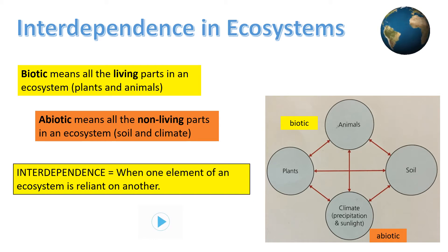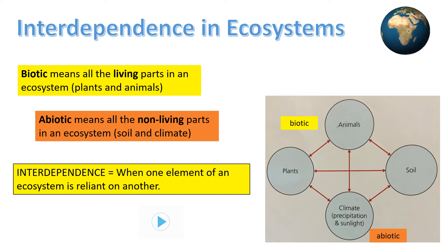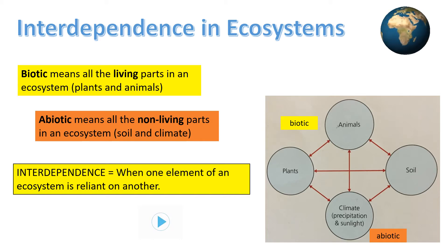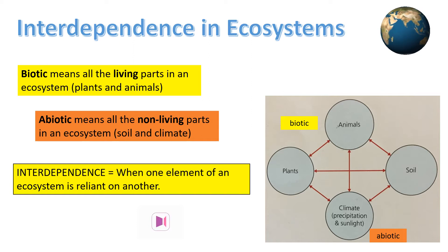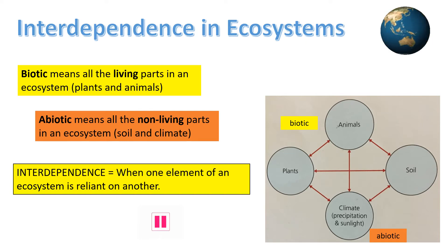Notice the two-way arrows that connect these key parts of an ecosystem. Some are obvious, such as climate providing moisture to water the plants and drain into soils and rivers, which in turn supports animals. Others are not so straightforward, such as plants and soils providing stores of moisture which may be transferred back to the atmosphere through evapotranspiration. It would be well worth making a copy of this basic diagram including its arrows before moving on.